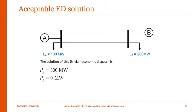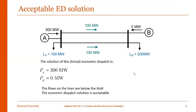In this case, the solution of economic dispatch gives us total production for generator A of 300 megawatts and total production for generator B of 0 megawatts. In both lines, we have a flow of 100 megawatts. This is trivial because we don't want to fire up the more expensive generator, so we're generating everything at generating station A. We observe that the flow of the lines are well below limit and the economic dispatch solution is accepted.